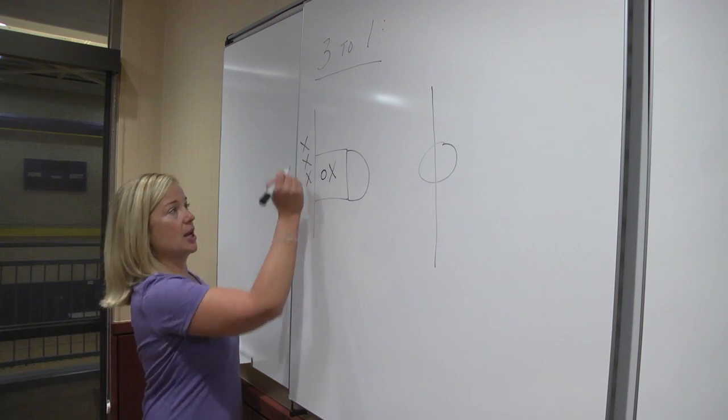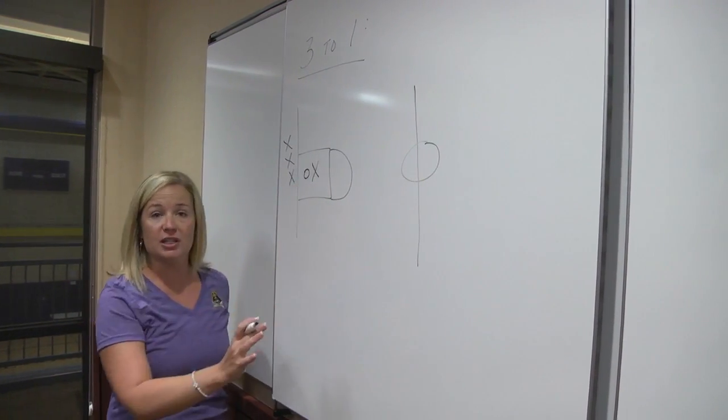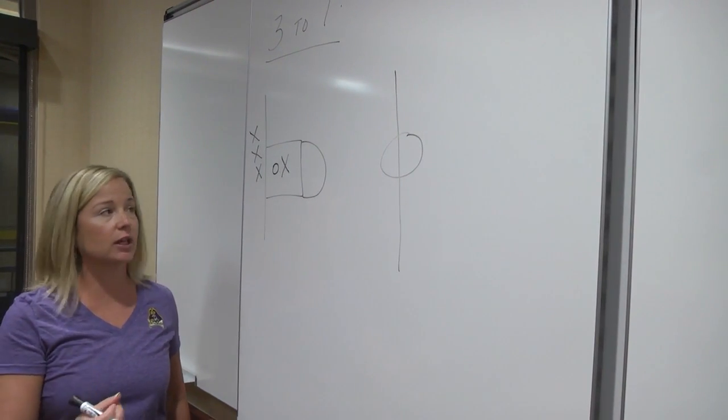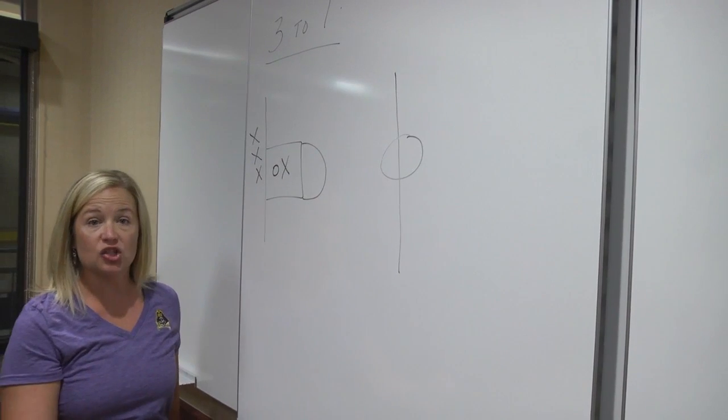So your line is going to be here on the baseline. Your offensive player and your defensive player close enough to touch. Now this is not a zig-zag drill. This is literally 3-1, what we call a chest-high turn.